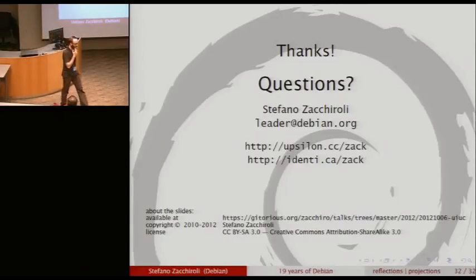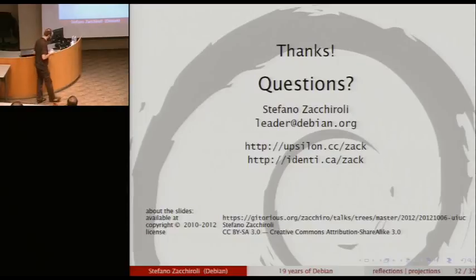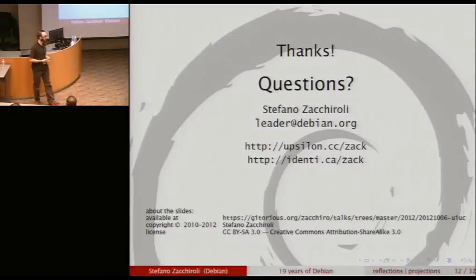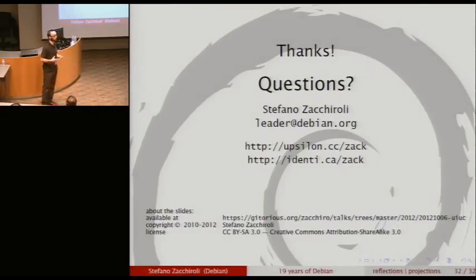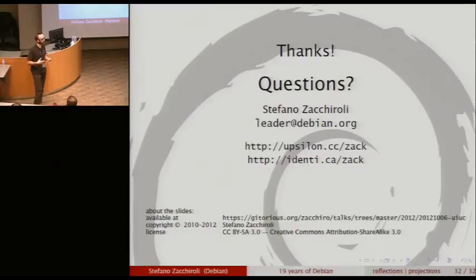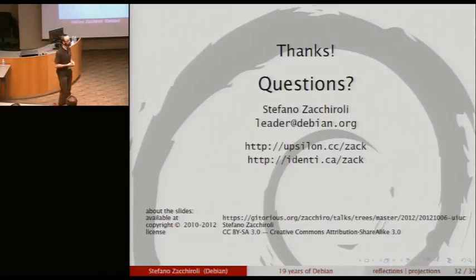Question: What does your role as Debian project leader entail? The Debian project leader is the public face of Debian, selected yearly by all the developers. It's a management role in the sense of solving conflicts that arise in the project, taking care of Debian's assets and deciding how money is used, doing communications, going to conferences. And it's also a kind of Secretary of State role — I take care of the politics with all other actors in the free software world, including companies and political entities like the Free Software Foundation.